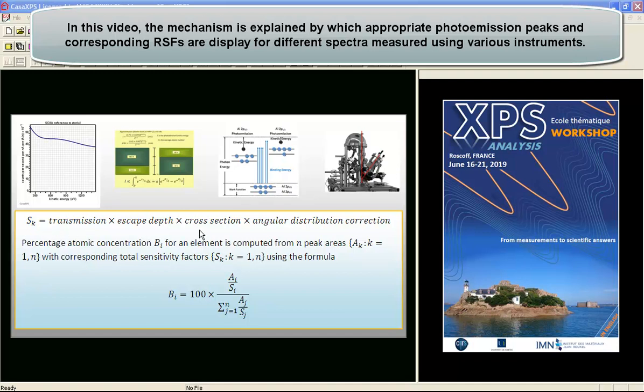Once all of these have been combined together, we end up with this total sensitivity factor that can be introduced into an atomic concentration calculation. This relates the areas by dividing by these sensitivity factors to the total signal obtained by summing all of the areas involved in the calculation, all scaled by these sensitivity factors.